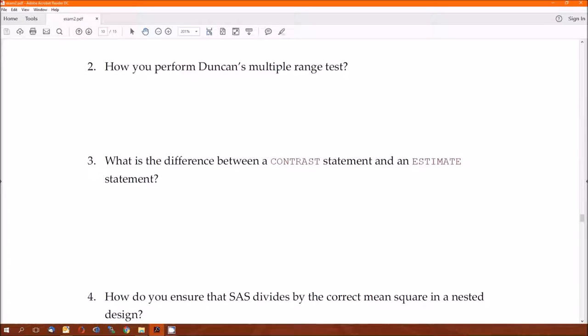How do you perform Duncan's multiple range test? You're going to use the Duncan option on a means statement. So I'm looking for both you specify Duncan and also the means statement. I think everybody got that right.